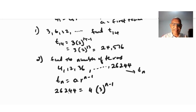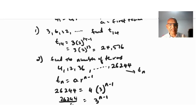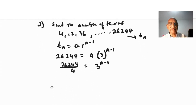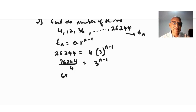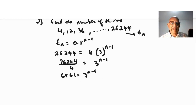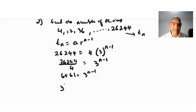To solve for n, we divide both sides by 4: 26,244 divided by 4 equals 3^(n-1), which gives 6,561 = 3^(n-1). This isolates the term with the unknown exponent. By trial and error, we look for a power of 3 that gives 6,561. By trial and error, 3^8 = 6,561.